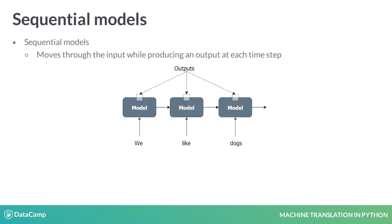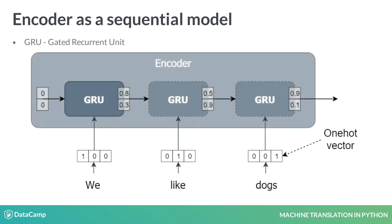Sequential models go from one input to the other, while producing an output at each time step. During time step 1, the first word is processed, and during time step 2, the second word is processed. The same model processes each input. You will be using a type of sequential model called a gated recurrent unit, or GRU, in your translator.